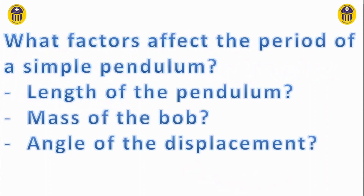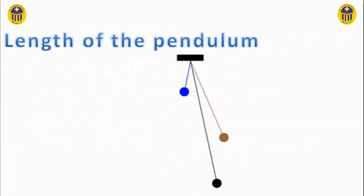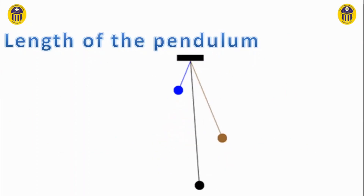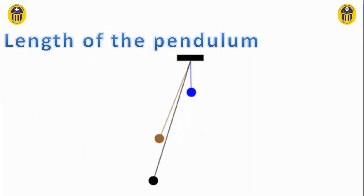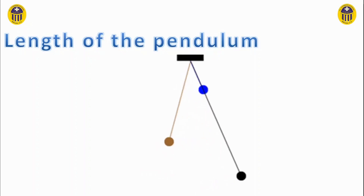What factors affect the period of a simple pendulum? Let's investigate them. Is it the length of the pendulum? Is it the mass of the bob? Is it the angle of the displacement? When we look at the length of the pendulum, we can see a sort of direct relationship — meaning the shorter the pendulum, the shorter the period. The blue pendulum takes much shorter time than the black pendulum.